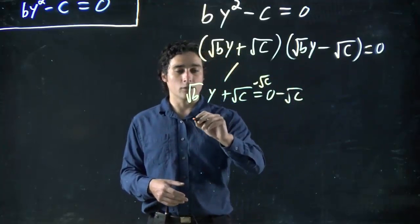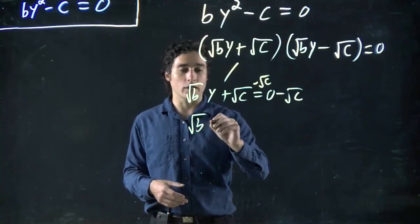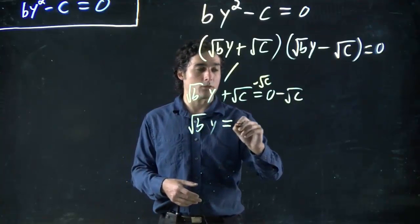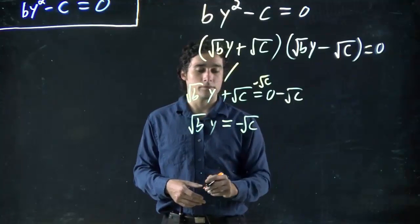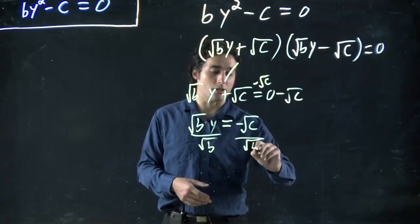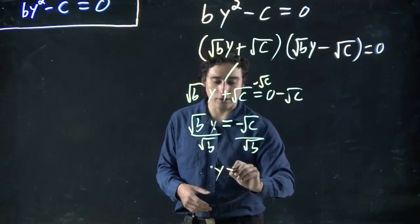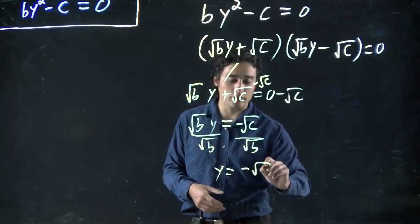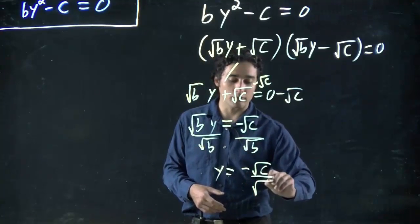So subtract square root of c from both sides. Okay. So we get square root of b, whatever that might be, equals minus square root of c. Divide both sides by square root of b because we want y on its own. The same rules we've always been following. So what is y equal to, in this case, minus the square root of c all over square root of b?